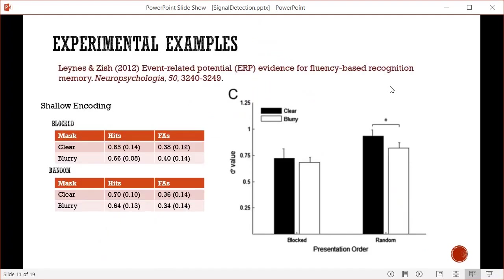Here are some experimental examples. My student Kevin Zish and I did a study where we were interested in weak memories using shallow encoding. We varied the test format and whether items were clear or blurry at test. As you can see from the hits and false alarms, performance wasn't fantastic - it was above chance but this was a hard test because memories were weak. The D prime values are fairly small because we had weak memories.